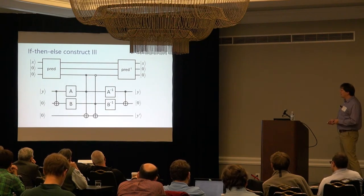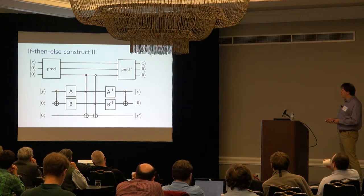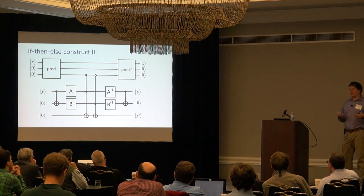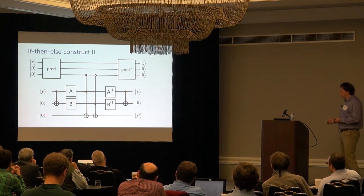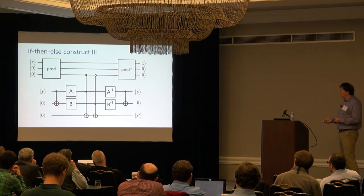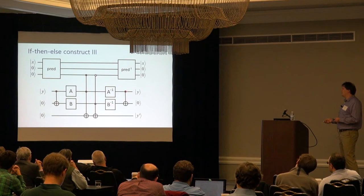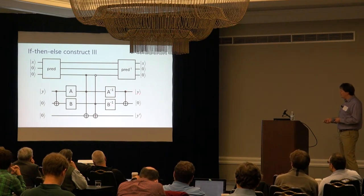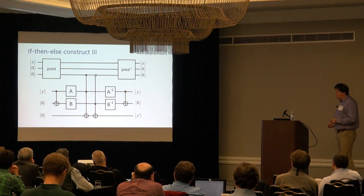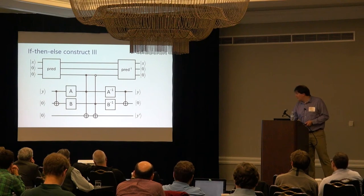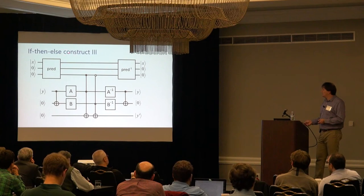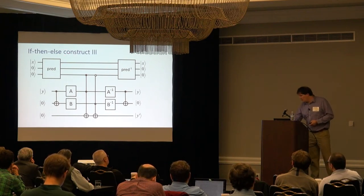A third method — what we use in REVS — avoids the all-ones state but requires making a copy and running branches, cleaning them up separately. That still leaves the Y information around, so you clean that up later. That's what REVS uses for if-then-else. For higher-level control flow, there are also ways to do bounded loops. But I want to drill down into what's inside these boxes — the elementary operations.